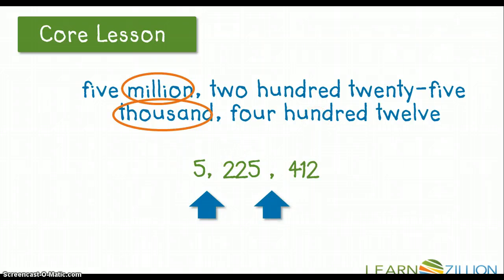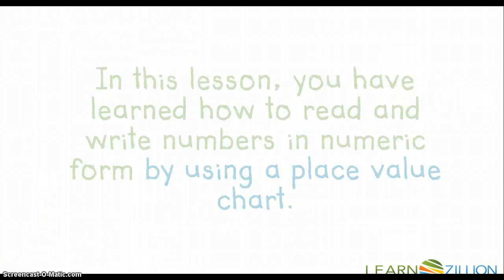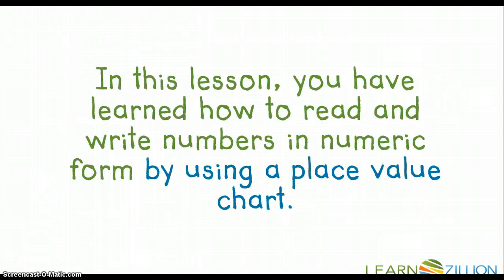So let's check and make sure that we're correct. We have five million. There's five million. We have a comma that signifies that it's in the millions place. In this lesson, you've learned how to read and write numbers in numeric form by using a place value chart.